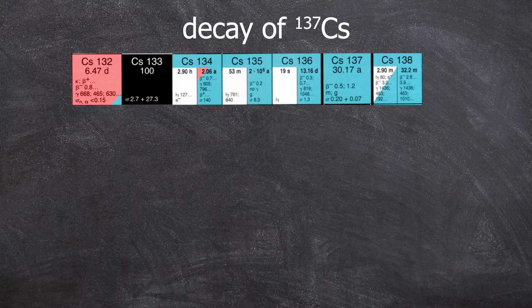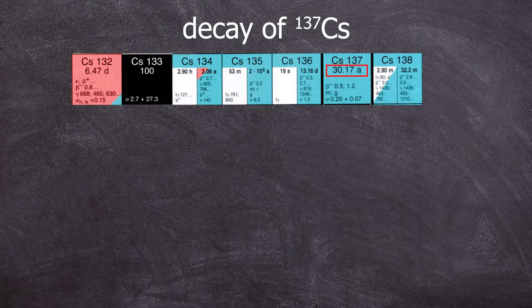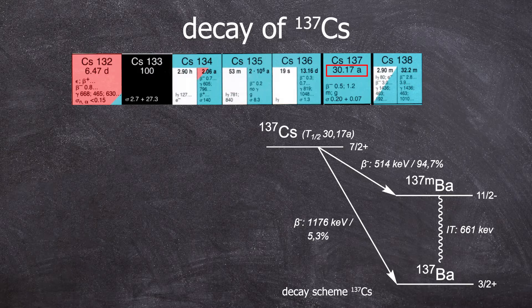Cesium-137 has a relatively long half-life of about 30 years, especially for a neutron-rich nucleus. This is because the beta-minus decay it undergoes is forbidden.